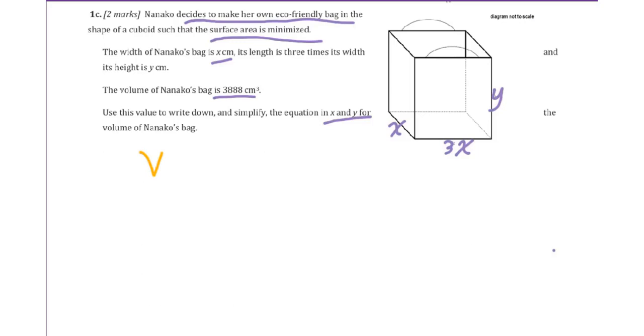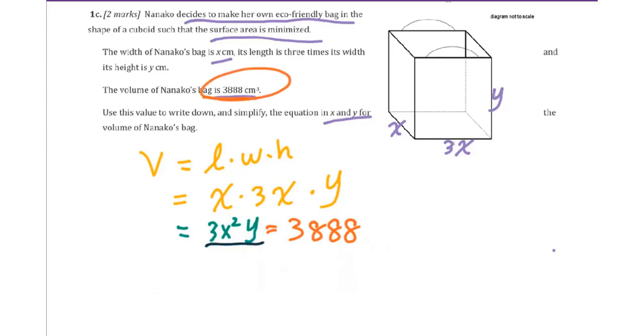Volume we use V to stand for that. You will get the length times width times height. So we have x times 3x times y. So we get 3x squared y. It equals 3,888. Both sides we divide by 3. You will get x squared y equals 1296.